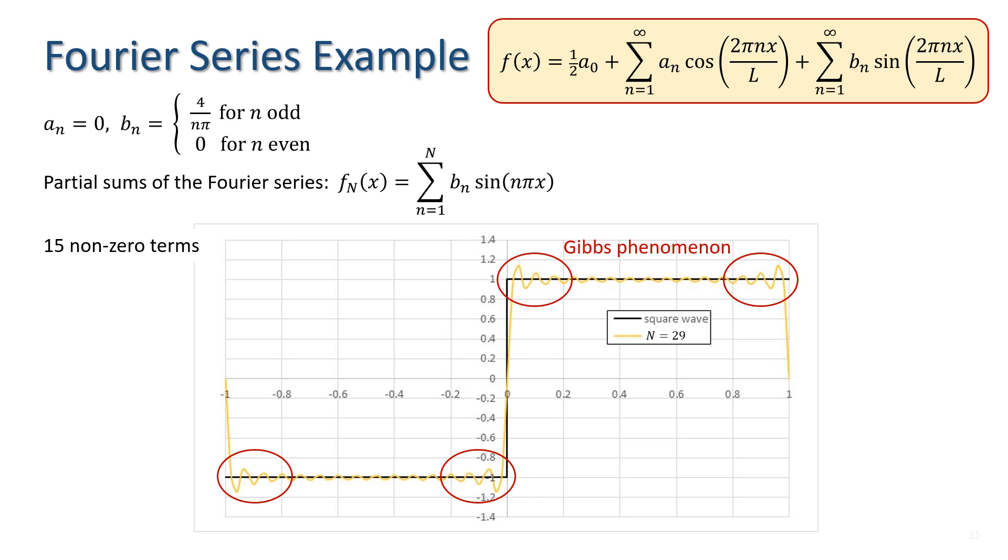Now, if we had an infinite number of terms, then the Fourier series would coincide with the square wave. But this is, of course, impossible in practice. We can only do finite sums.